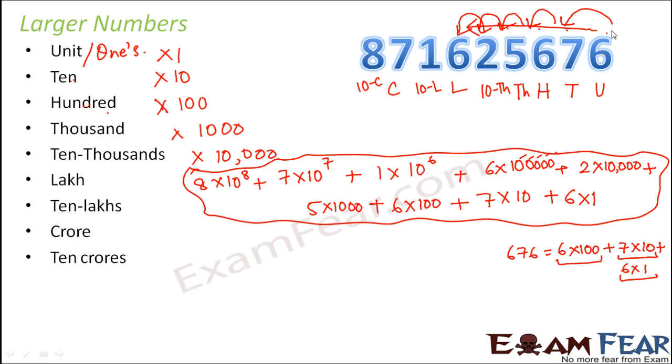But always remember that the digit on the right, the rightmost digit is the digit at the units place or ones place. So this is how we denote larger numbers and once you have an idea about this, it becomes easier for you to name larger numbers.